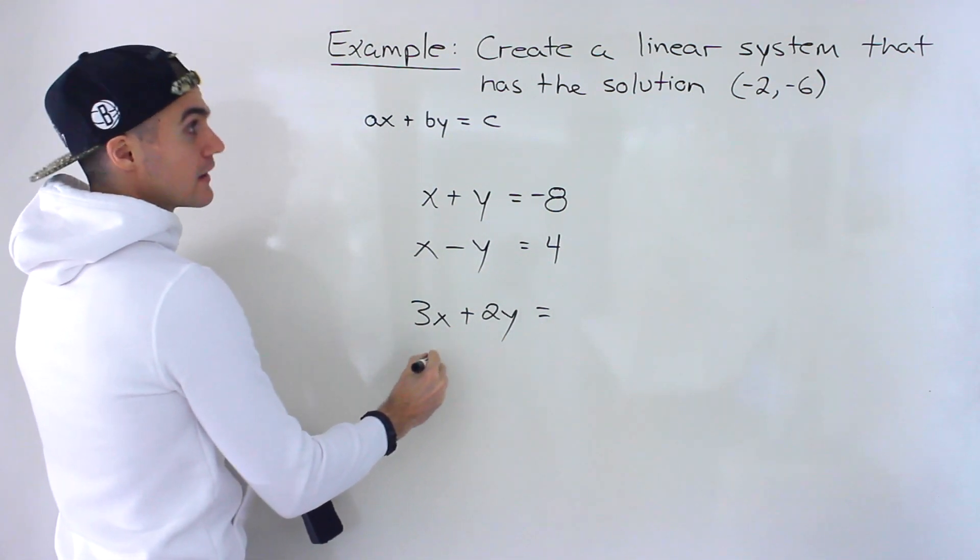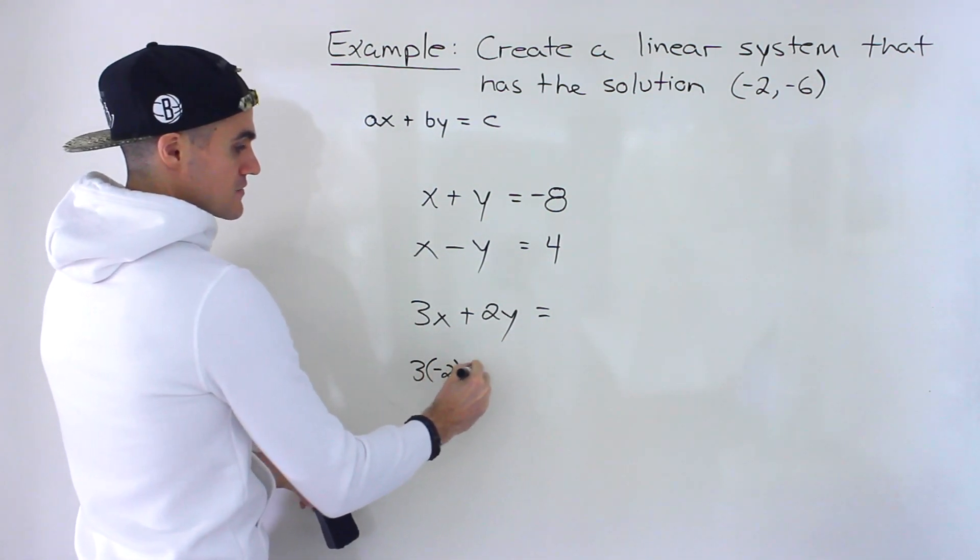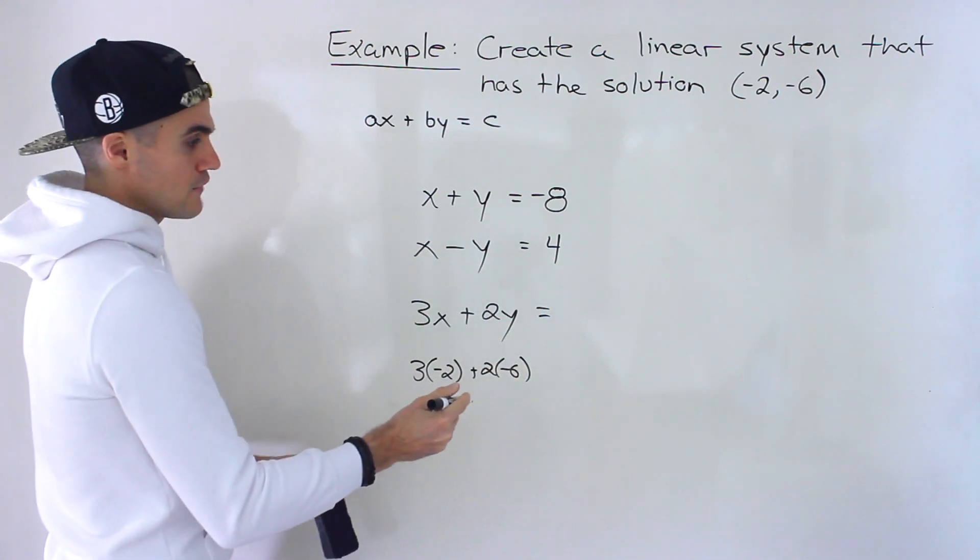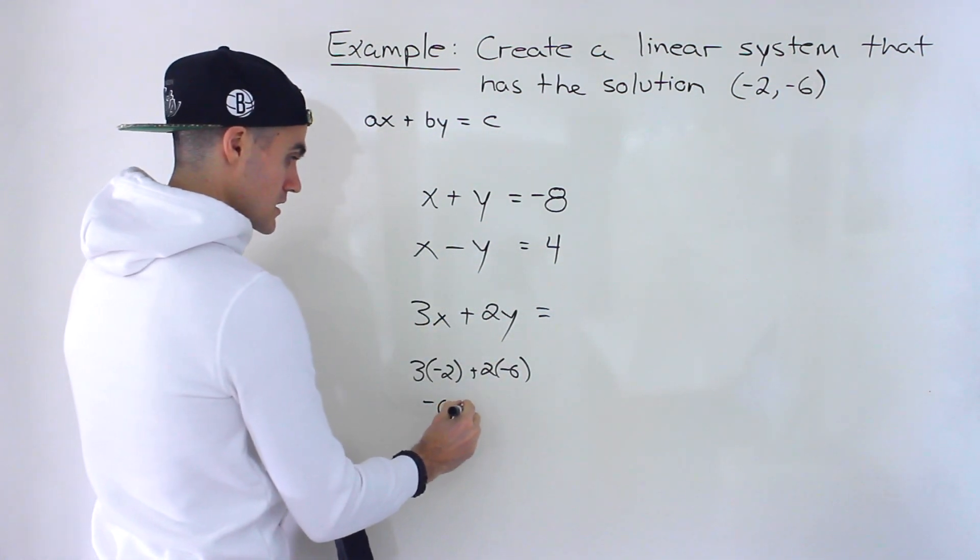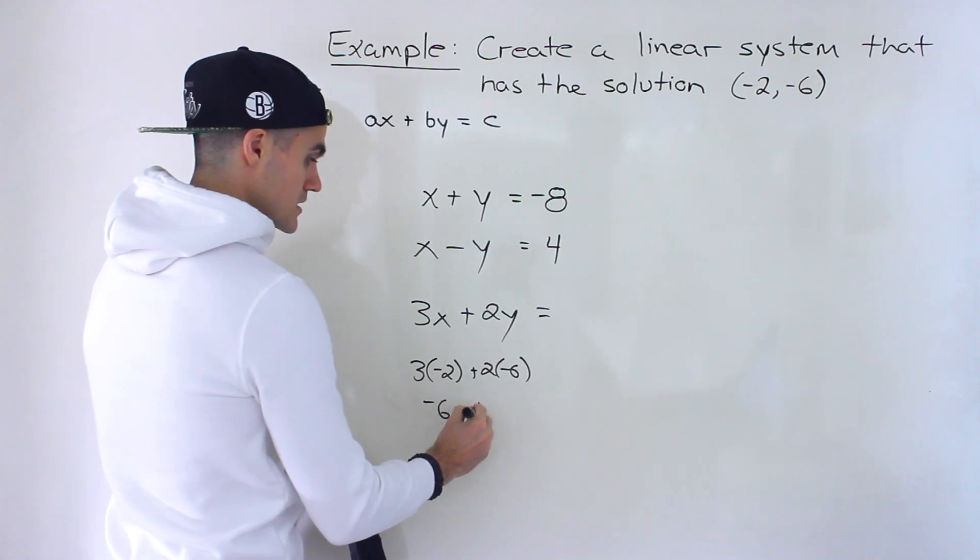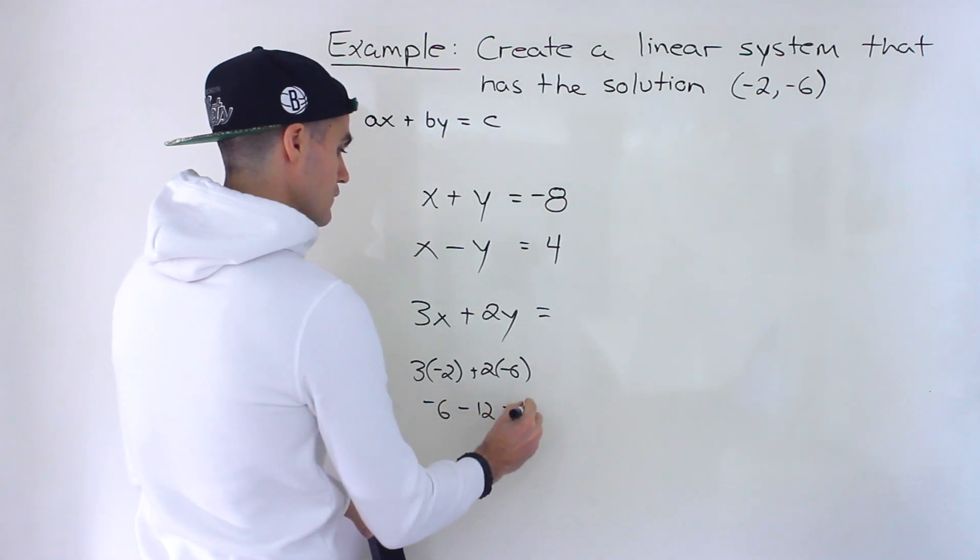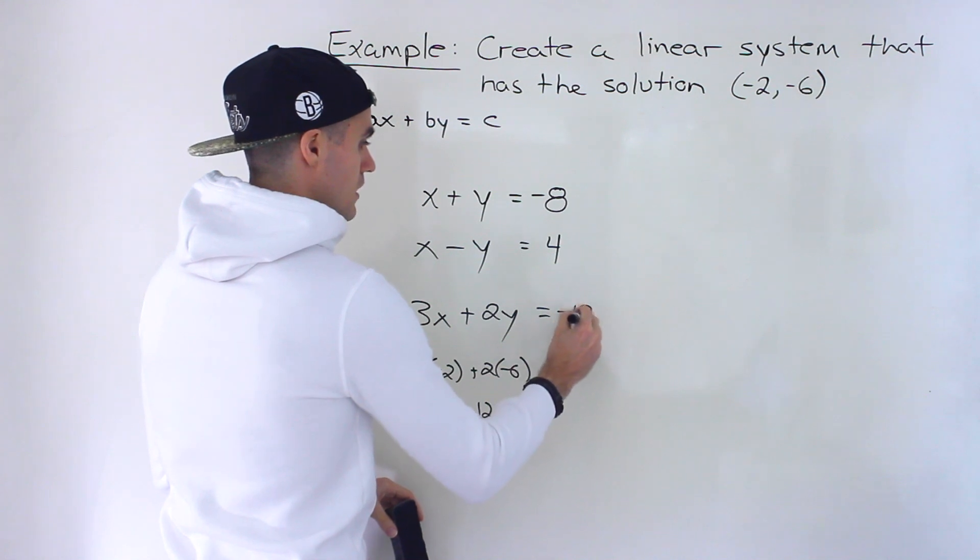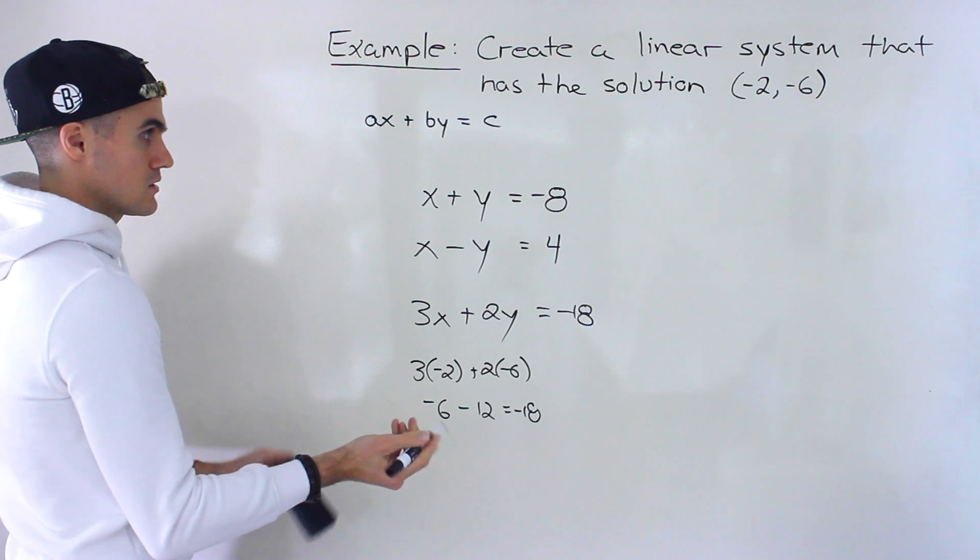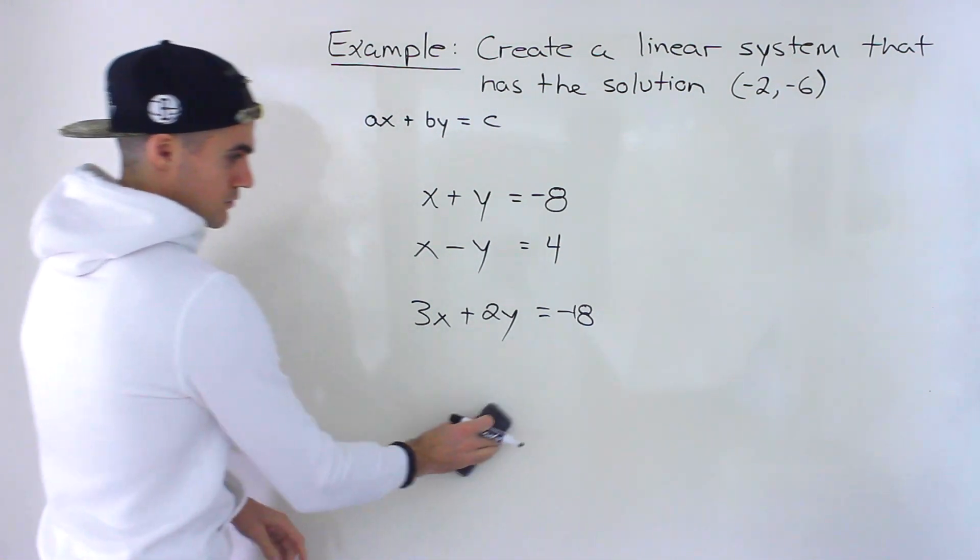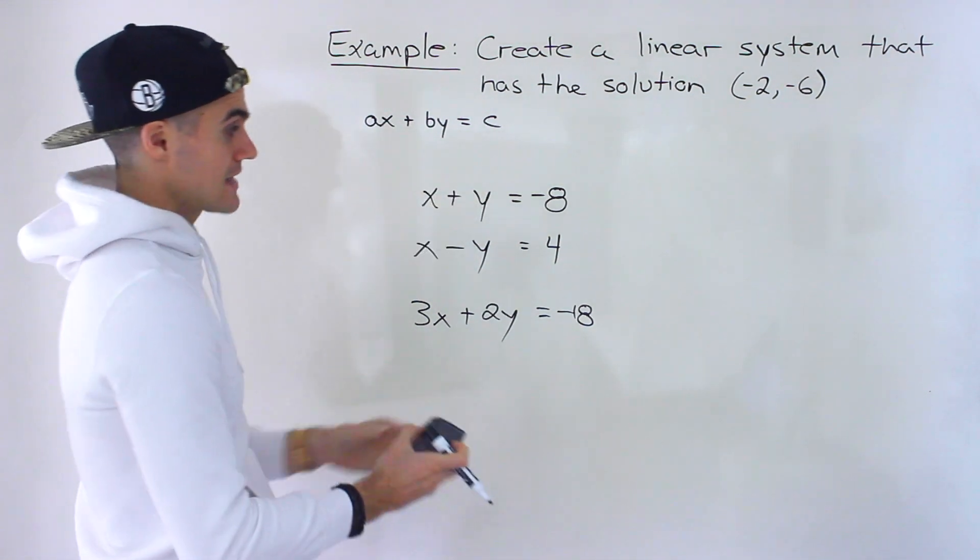Well, same thing, we would just plug in negative 2 for the x value, and then we plug in negative 6 for the y value, see what that right side should equal. So we'd have negative 6 minus 12, which would give us negative 18. So this right here would be negative 18. So that's another line that contains that point.